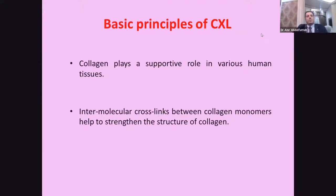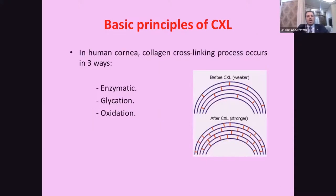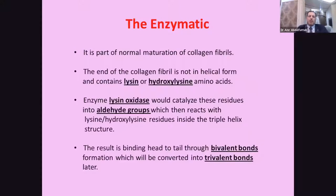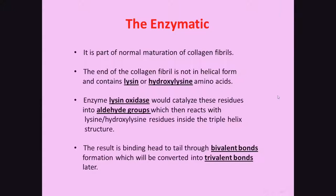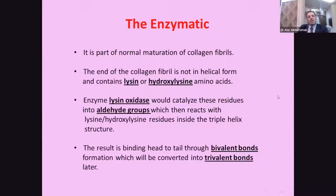The basic principle of cross-linking: collagen plays a very supportive role in various human tissues. The intermolecular cross-linking between collagen monomers helps to strengthen the structure of collagen. In the human cornea, we have three processes of cross-linking: enzymatic, glycation, and oxidation. The enzymatic process is a normal part of maturation of collagen fibrils. The ends of collagen fibrils have lysine and hydroxylysine amino acids. The enzyme lysyl oxidase catalyzes these residues into aldehyde groups, which react with lysine and hydroxylysine residues inside the triple helix, forming bivalent and trivalent bonds.